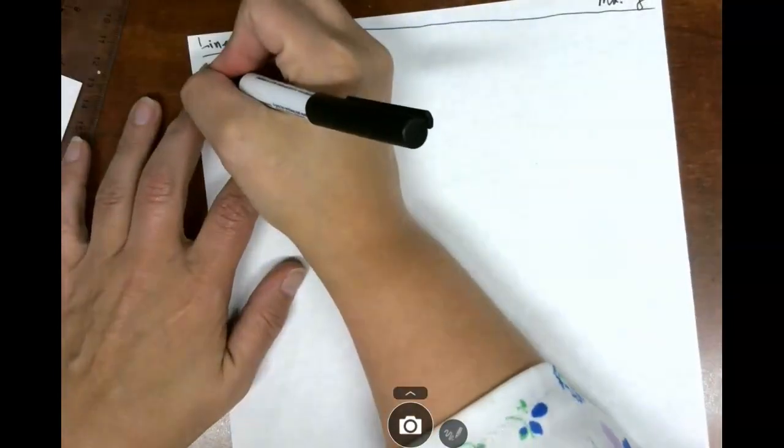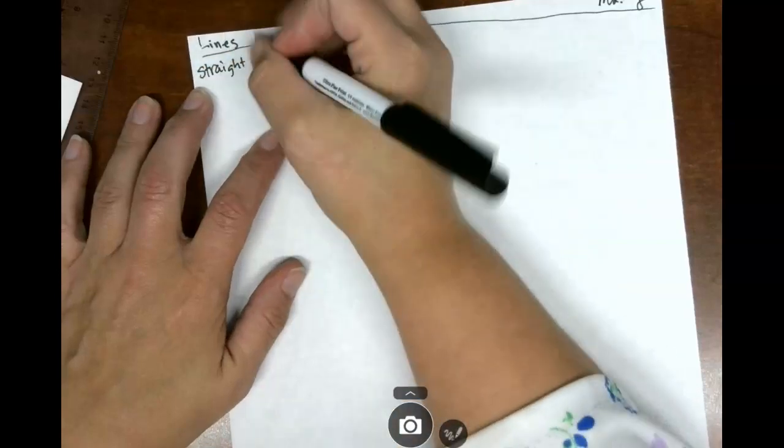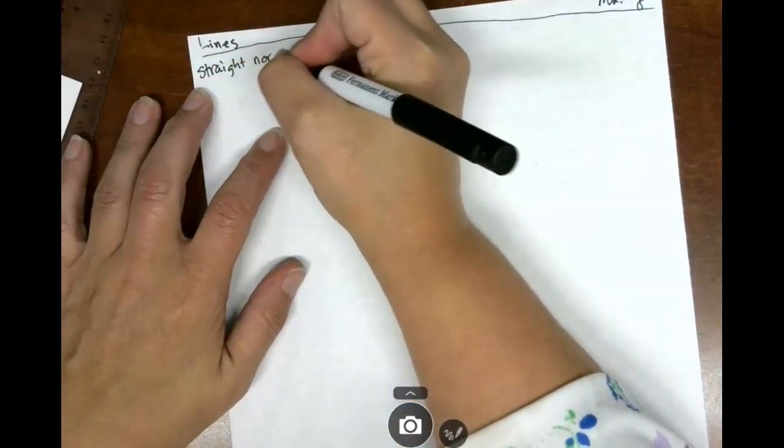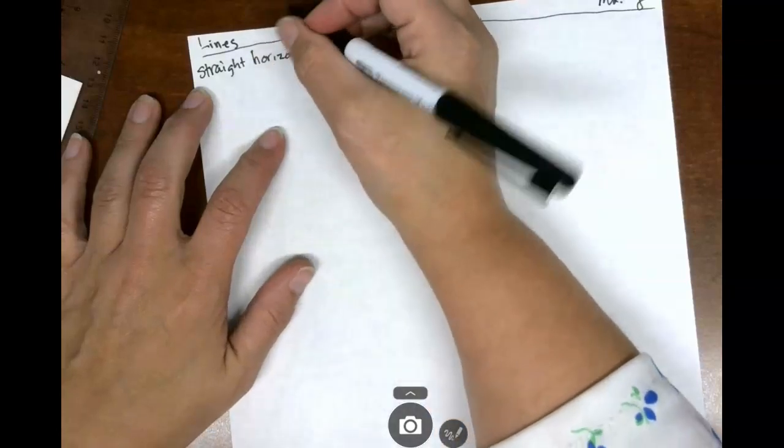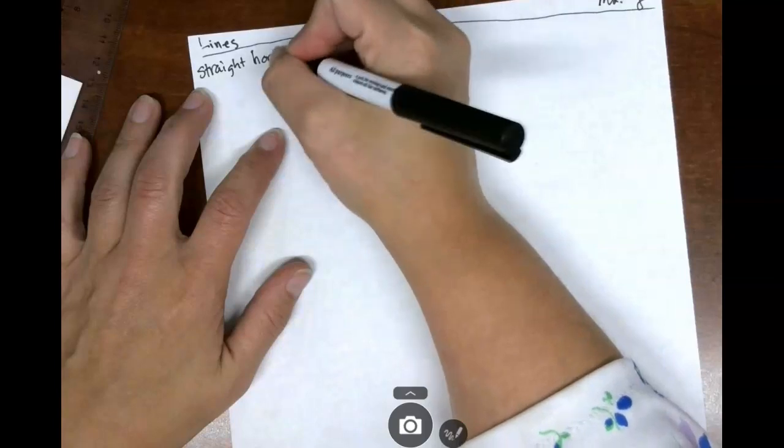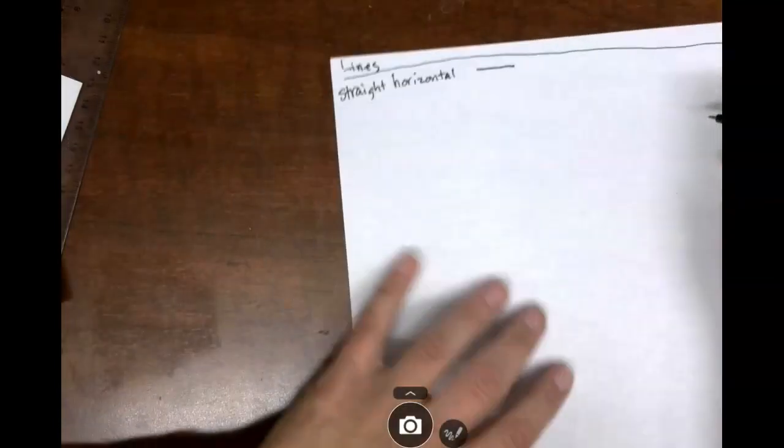Draw a line here. First one we're going to talk about is straight, S-T-R-A-I-G-H-T, horizontal, H-O-R-I-Z-O-N-T-A-L. And that is just this line right here. It's the one that's lying down like it's taking it out.